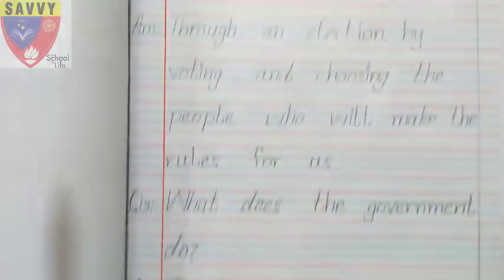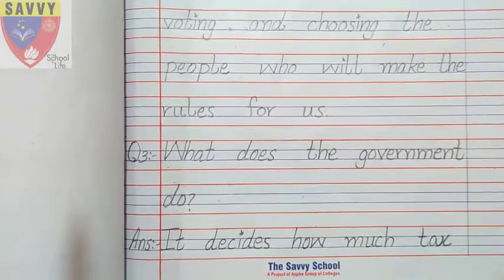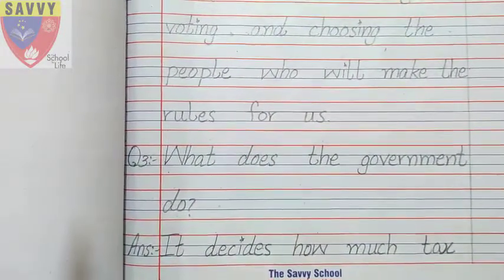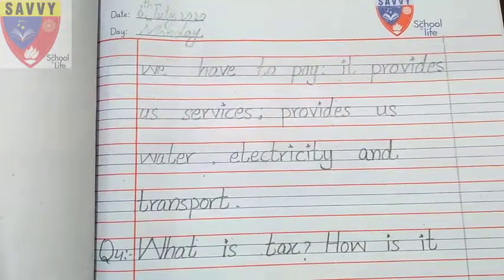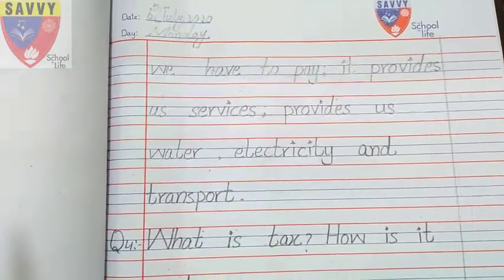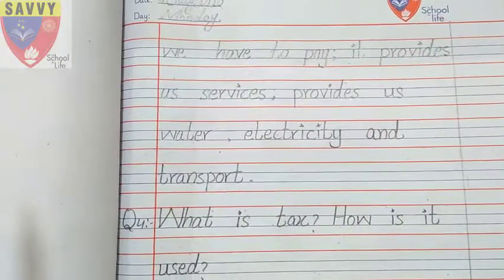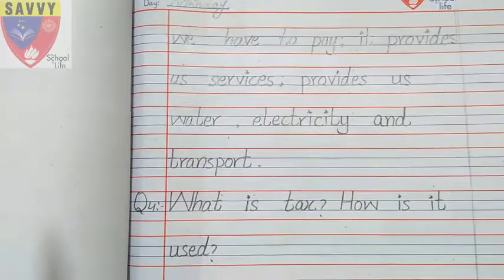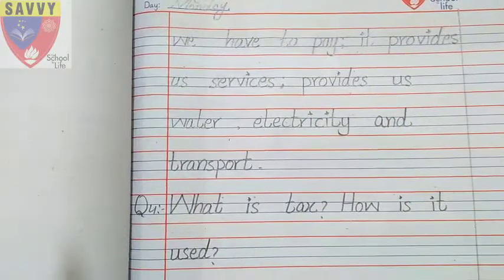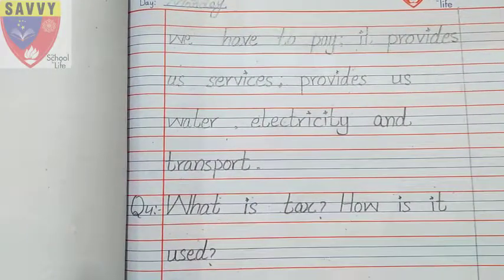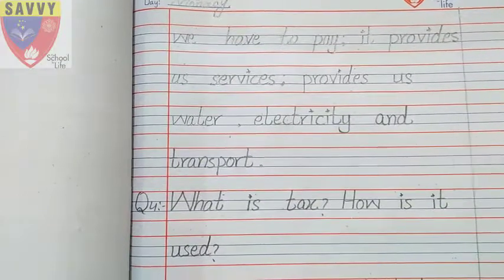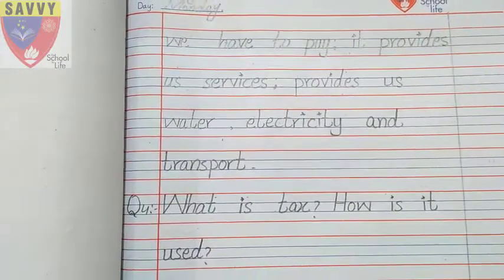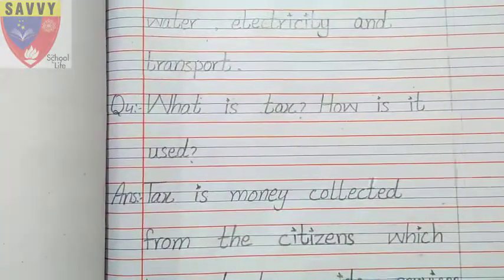Question number three: What does the government do? Government kya karti hain. It decides how much tax we have to pay, it provides us services, provides us water, electricity, and transport. They decide how much tax to pay and which services will be provided — water, electricity, and transport facilities are provided to us.